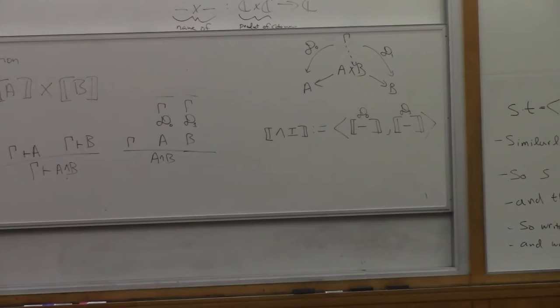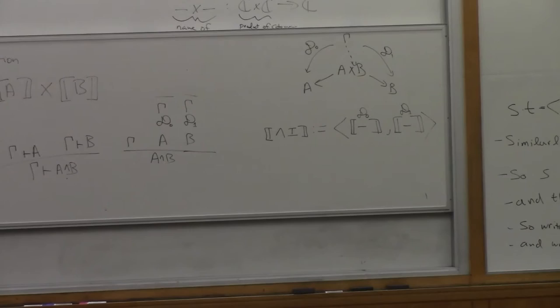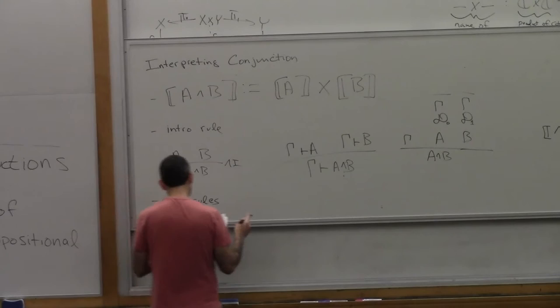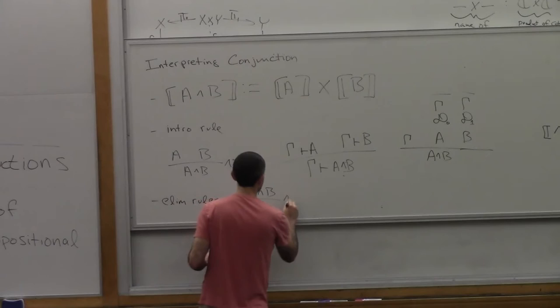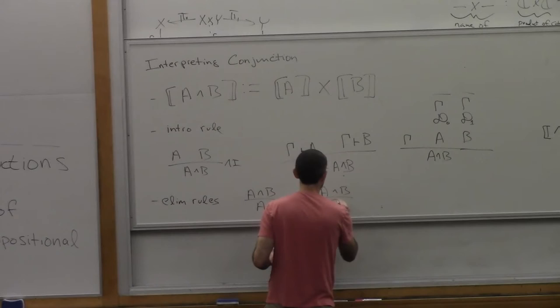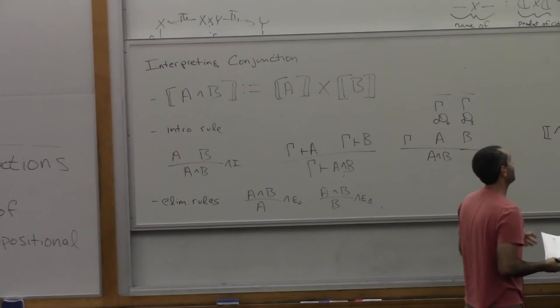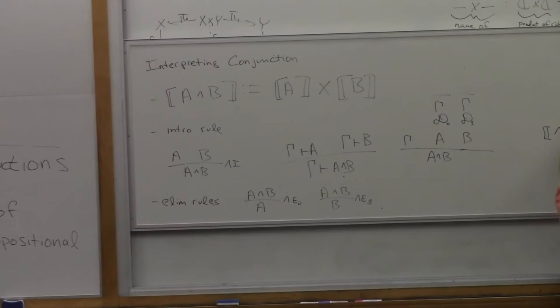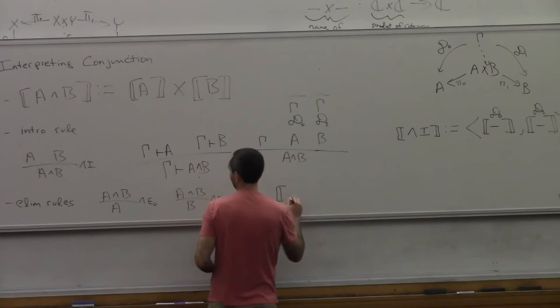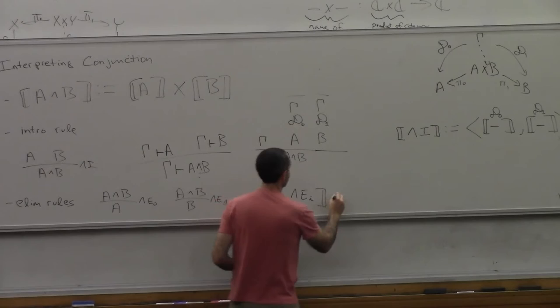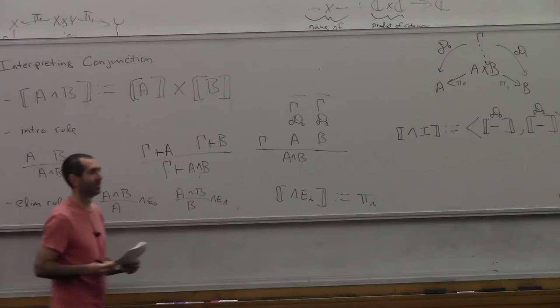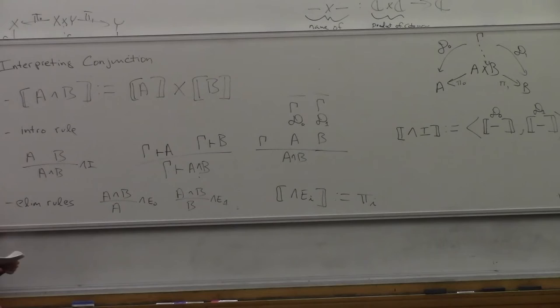The elimination rules for conjunction say: from A ∧ B we can infer A, and from A ∧ B we can infer B. The interpretation of the i-th elimination rule is just the i-th projection π_i. So we've got intro and elimination rules interpreted for truth, falsehood, and conjunction.